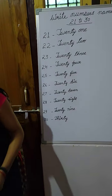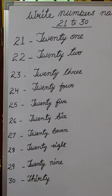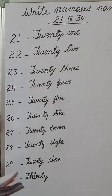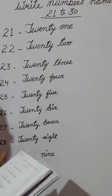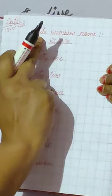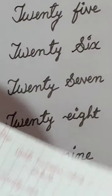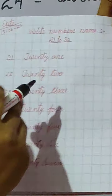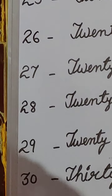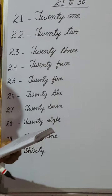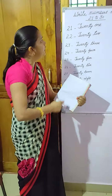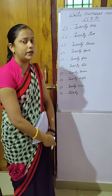Okay, children? Children, so you have to learn all these spellings. Children, today you have to do like this. You have to open your maths copy and put the date at the corner. Then put the heading — write numbers name 21 to 30. Then write like this. You have to write with pencil in your maths copy. Okay, children? You have to do all that homework and learn it. Okay, children. Thank you.